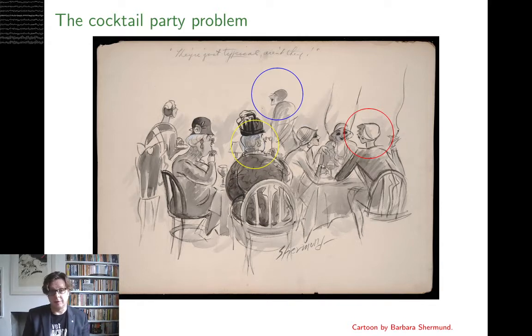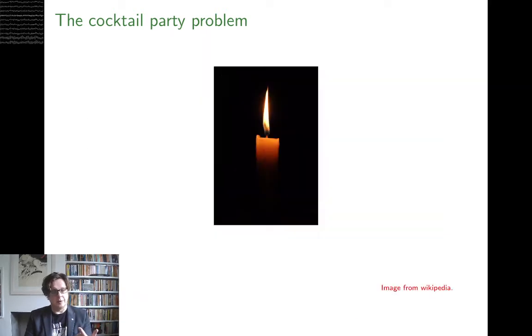But at the same time, there's all sorts of other noise going on. For example, the lady circled in blue is also talking. So the problem faced by the lady in yellow, or the brain of the lady in yellow, is how to separate the signal from the red circle lady from the signal from the blue circle lady, and indeed from all the other environmental noise.